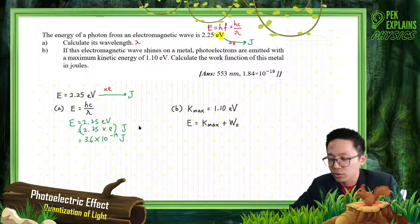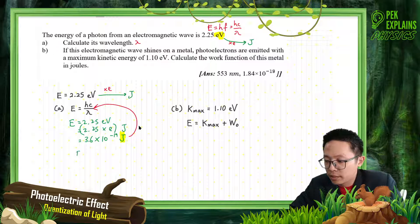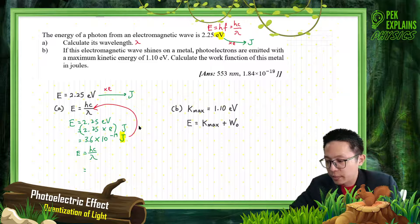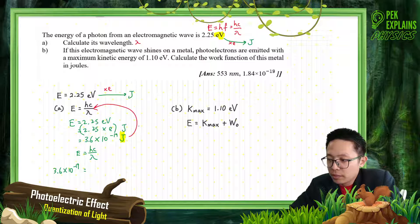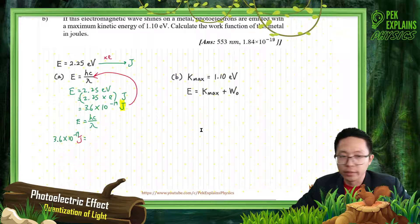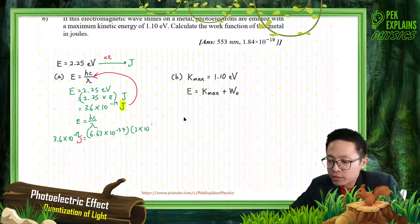Make sure you convert to joule first. After you convert, then substitute into the formula E = hc over lambda. Our E is 3.6 × 10⁻¹⁹ joule in SI units. Our H is 6.63 × 10⁻³⁴, and the speed of light is 3 × 10⁸. We want to find the wavelength from here.